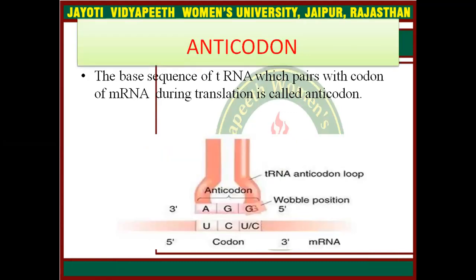What are anticodons? The base sequence of the tRNA which pairs with the codon of messenger RNA during the translation process is called an anticodon. Here you can see the codon present in messenger RNA and their complementary code, known as anticodon, are present in the tRNA.